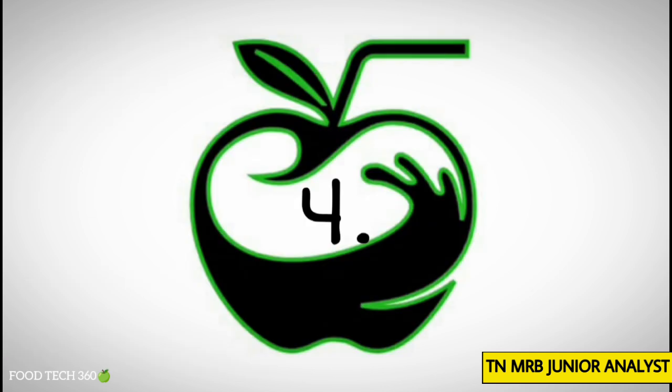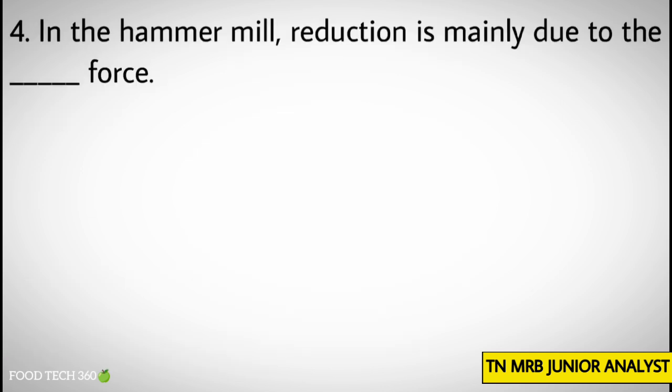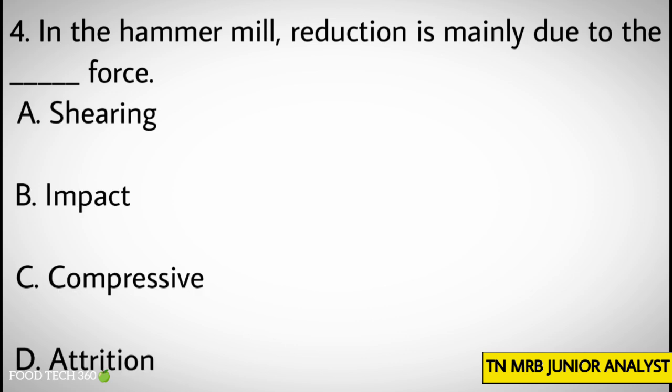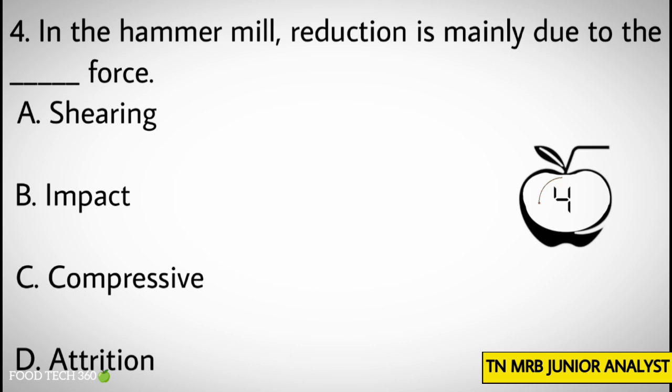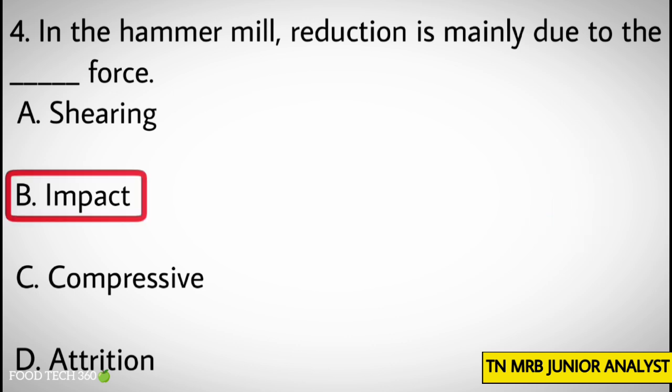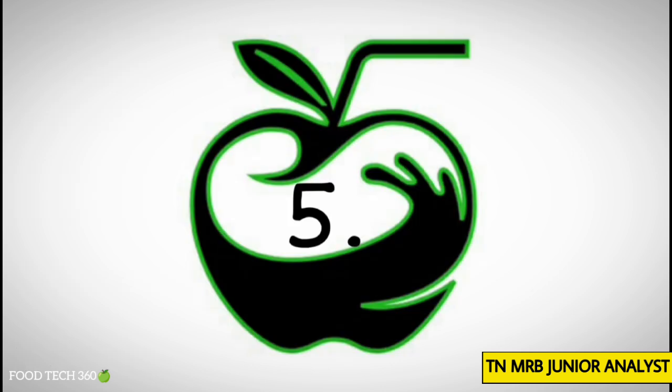Question number 4: In a hammer mill, reduction is mainly due to the dash force. Options: A. Shearing, B. Impact, C. Compressive, D. Attrition. Correct answer: Impact.